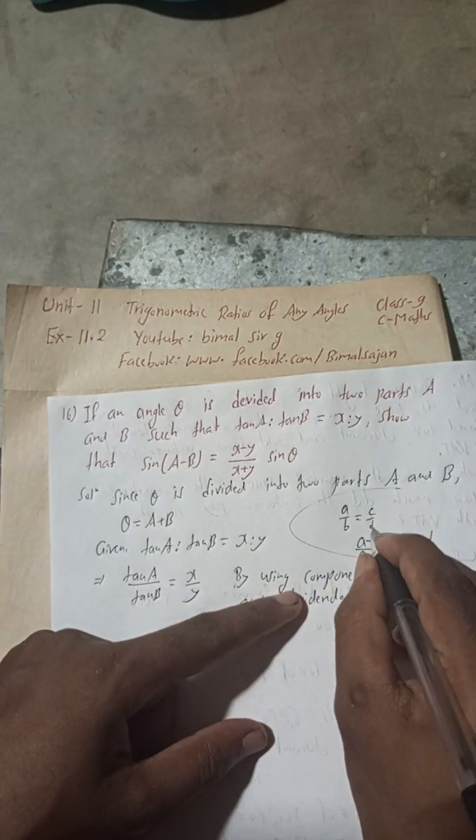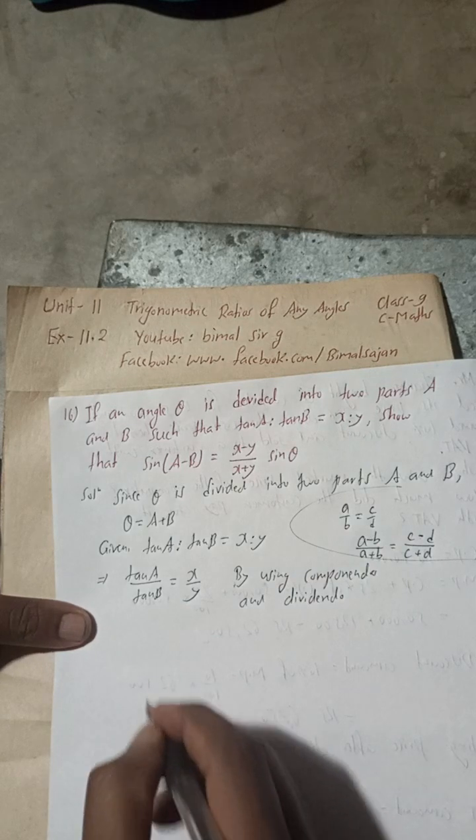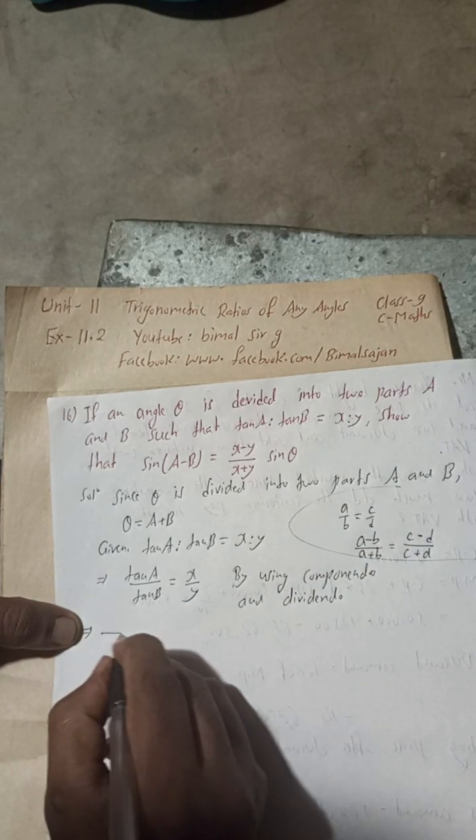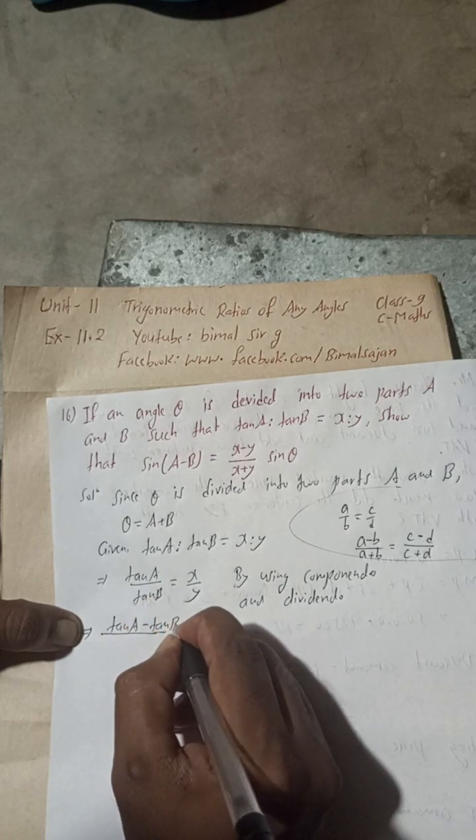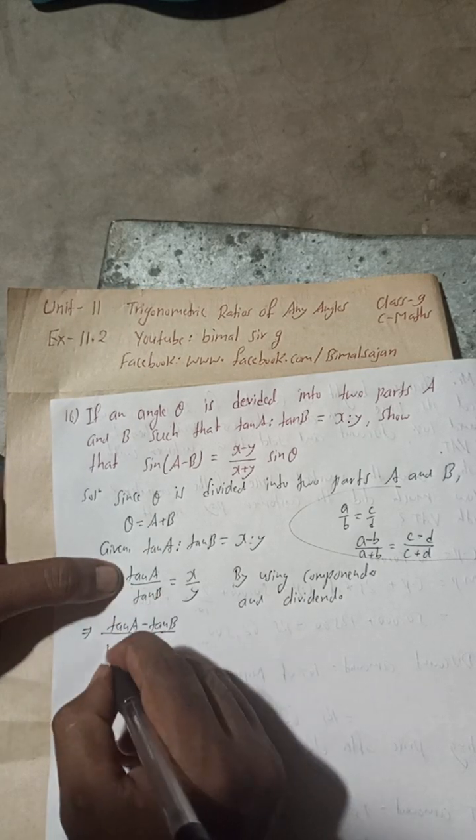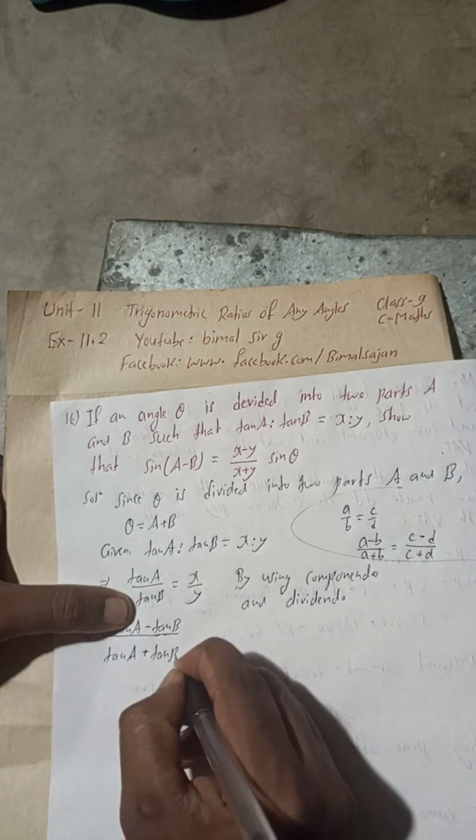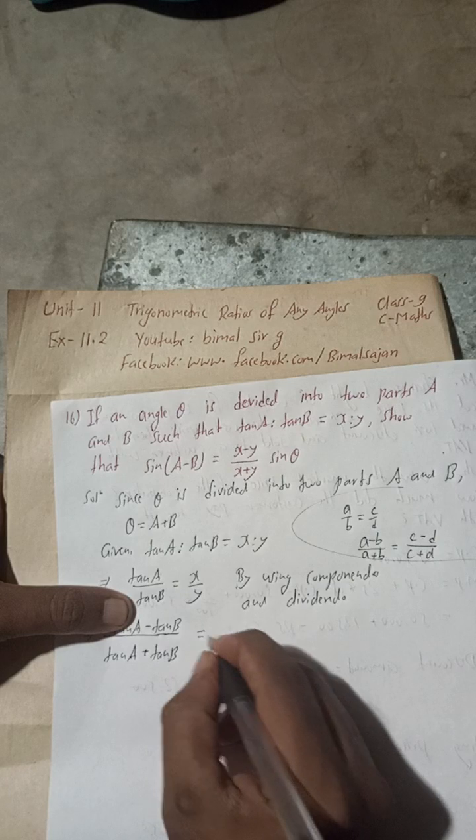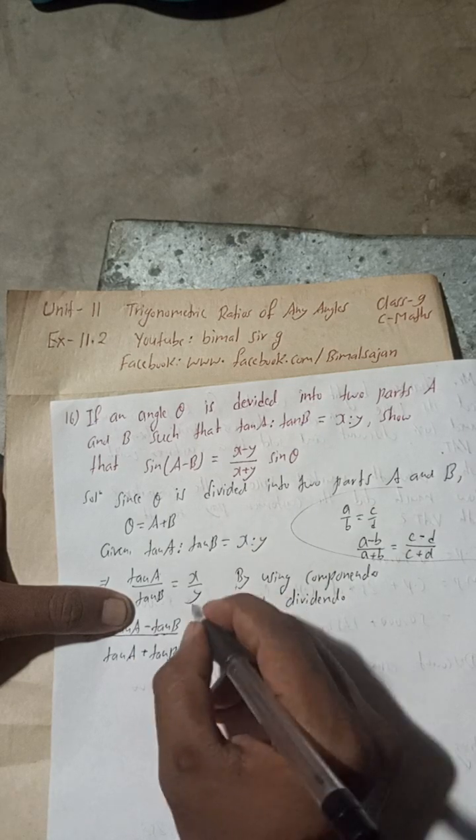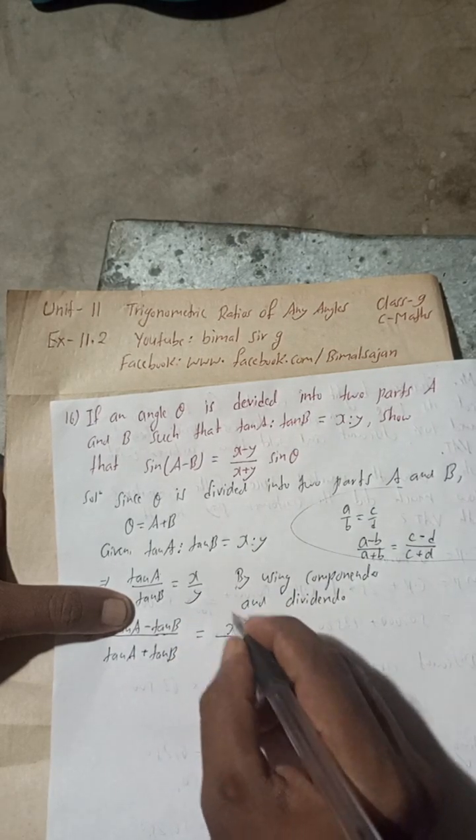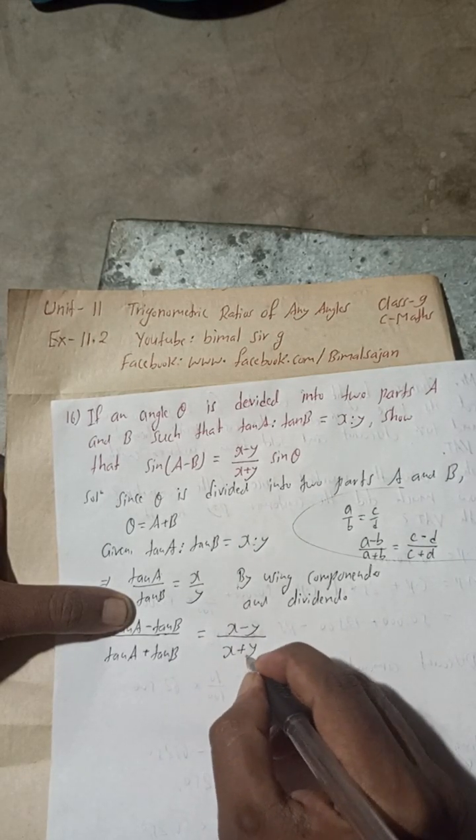This is componendo and dividendo. Now, same formula we are going to apply here. So tan A numerator part minus tan B denominator part, again tan A numerator part plus tan B, equals X minus Y and X plus Y.